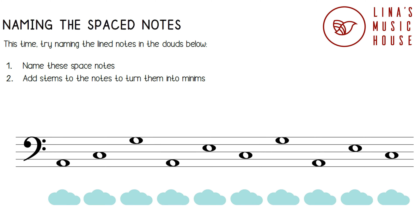Now let's apply what we've learned to the following exercises. Let's name these space notes. The suggested rule for the space notes from bottom to top is All Cows Eat Grass. The first note is in the first space. The first word is All, and the first letter is A, so this note is an A note. The next note is in the second space. The second word is Cows, so this is a C note.